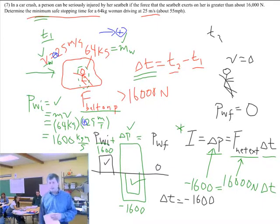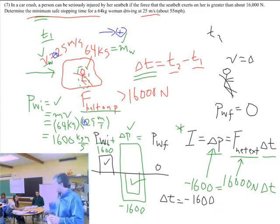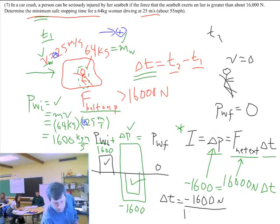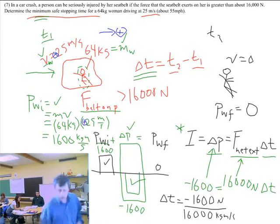I'm getting a little nervous. Why am I getting nervous? Because when I rearrange this, I'm getting a negative number for a delta T. That doesn't happen outside of science fiction. So that delta T has got to come out to be positive. Did I make a boo-boo somewhere?